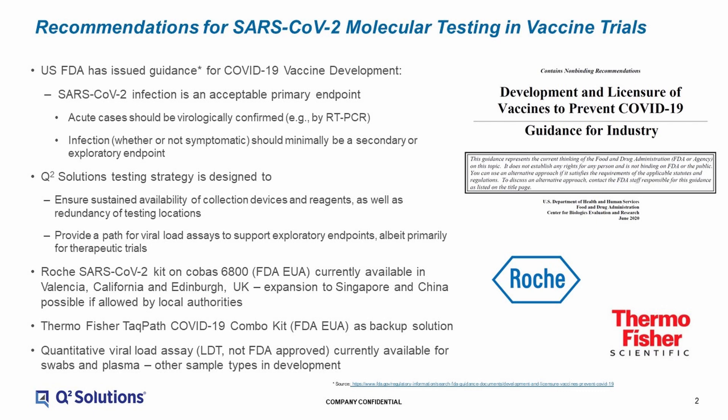If we think about molecular testing and vaccine trials, the FDA has issued guidance specifically for COVID-19 vaccine development. As part of that guidance, they state that SARS-CoV-2 infection should be a primary endpoint, and that for acute cases especially, they should be virologically confirmed — and that means by RT-PCR methodology. They also go on to state that infection, whether or not it is symptomatic, should minimally be at least a secondary or exploratory endpoint, but there seems to be a real preference to make it a primary endpoint.